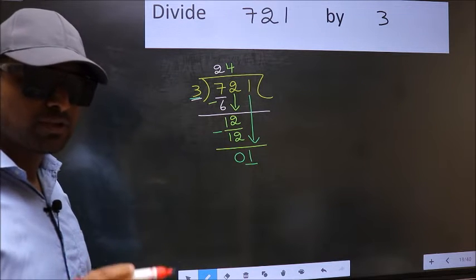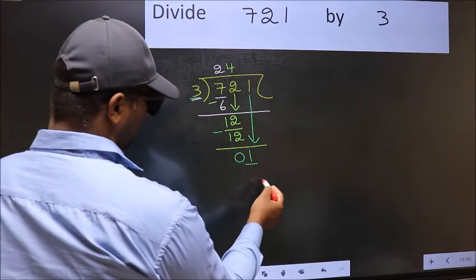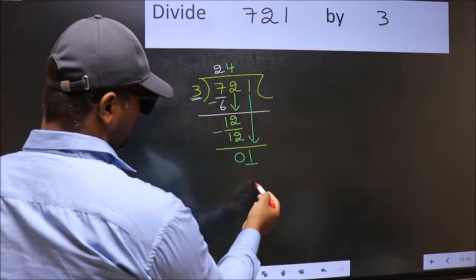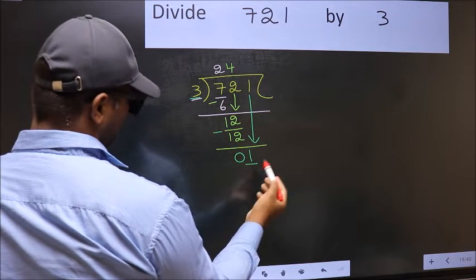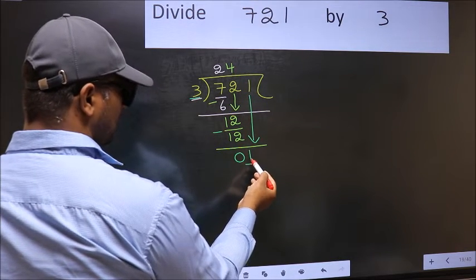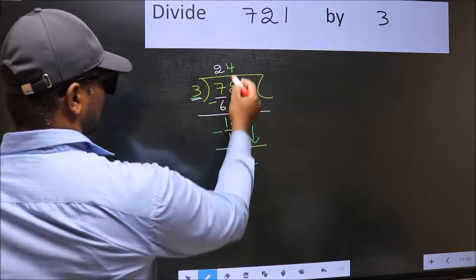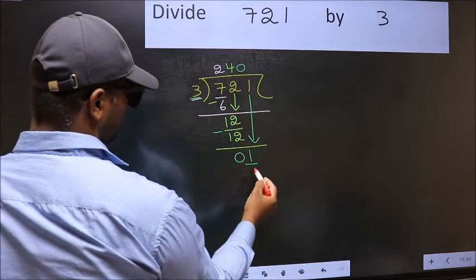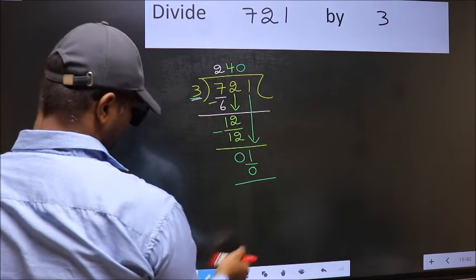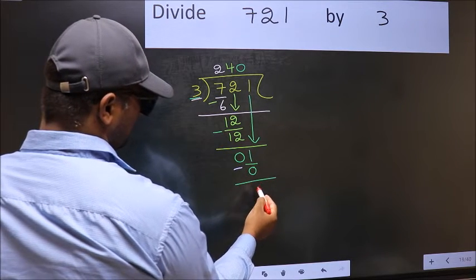Instead, what you should think of doing is, what number should we write here? If I take 1 here, I will get 3. But 3 is larger than 1. So what we should do is, we should take 0. So 3 into 0, 0. Now you should subtract, 1 minus 0, 1.